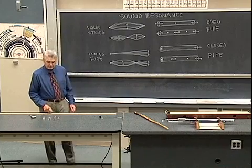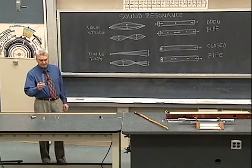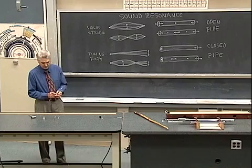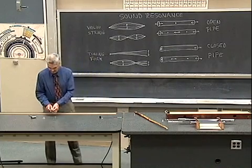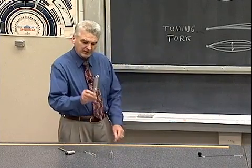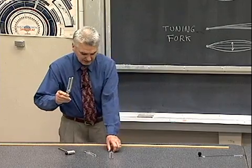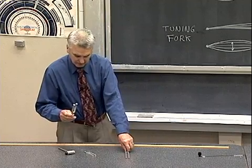Now the thing that determines the pitch of a tuning fork is the length of the tuning fork and the material it's made from. These aluminum tuning forks, these three have different pitches. The shorter one has the high pitch, this middle one has the medium pitch, and the longer one of course has the lower pitch and the lower frequency.